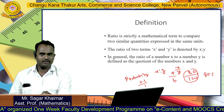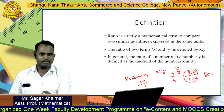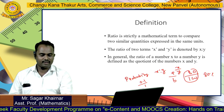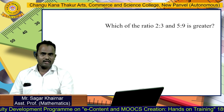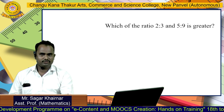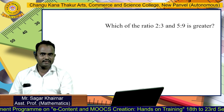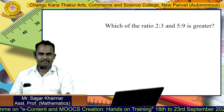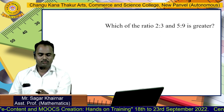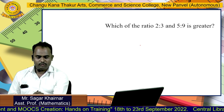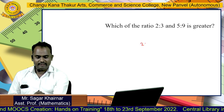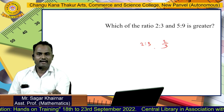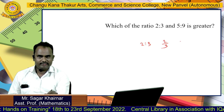In general, the ratio of number x to number y is defined as the quotient of the numbers x and y. Now we have these 2 ratios: 2 as to 3 and 5 as to 9. The question becomes: which one is greater? So we simply write down 2 as to 3 as 2 divided by 3, and the other ratio is 5 as to 9.